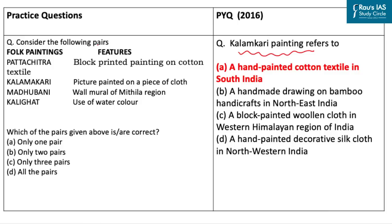The practice question asks: consider the following pairs — folk paintings and their features. Pattachitra is described as a block-printed painting on cotton textile — this is wrong, as Pattachitra is a scroll painting. The second option, Kalamkari, is described as a picture painted on a piece of cloth — this is also wrong, as Kalamkari is a hand-painted or block-printed cotton textile produced in Iran and in the Indian state of Andhra Pradesh. The third option, Madhubani, is described as a wall mural of the Mithila region — this is correct, as Madhubani is a mural made by women of the Mithila region of Bihar during ceremonial occasions like weddings.